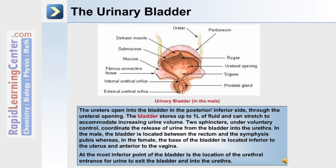From the ureters, urine is eventually delivered to the urinary bladder through the ureteral openings on the posterior inferior side. The bladder can store up to one liter of fluid and can stretch to accommodate increasing urine volume. Two sphincters under voluntary control coordinate the release of urine into the urethra. In the male, the bladder is located between the rectum and the symphysis pubis, whereas in the female, the base of the bladder is located inferior to the uterus and anterior to the vagina.